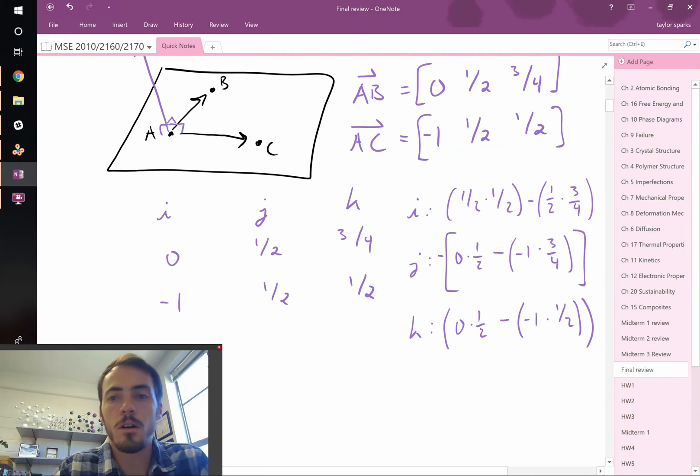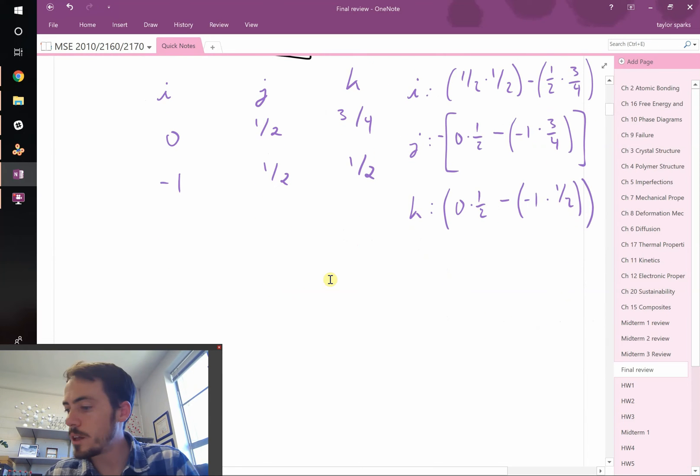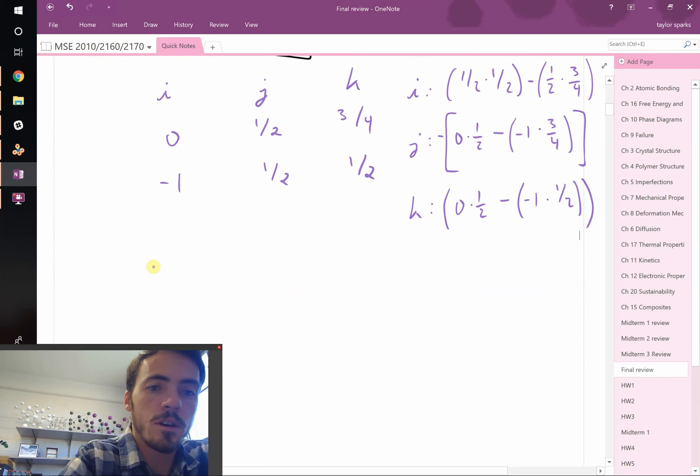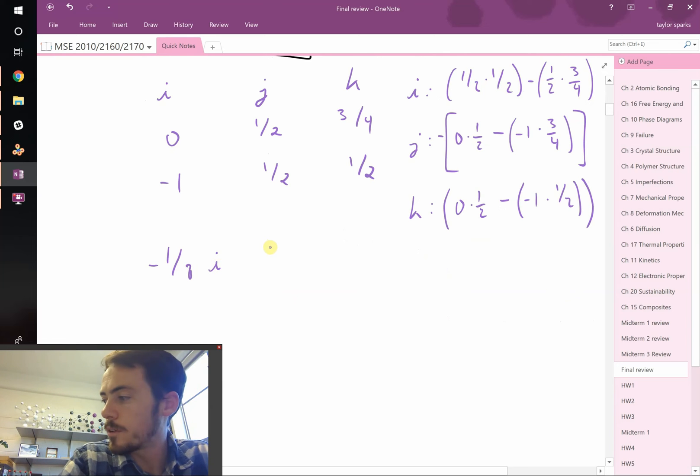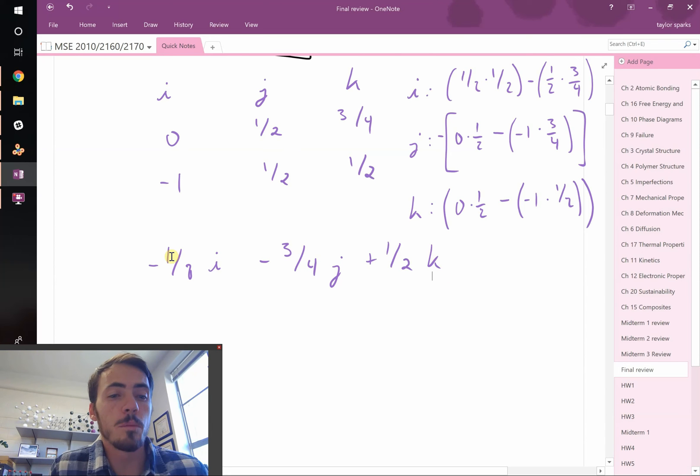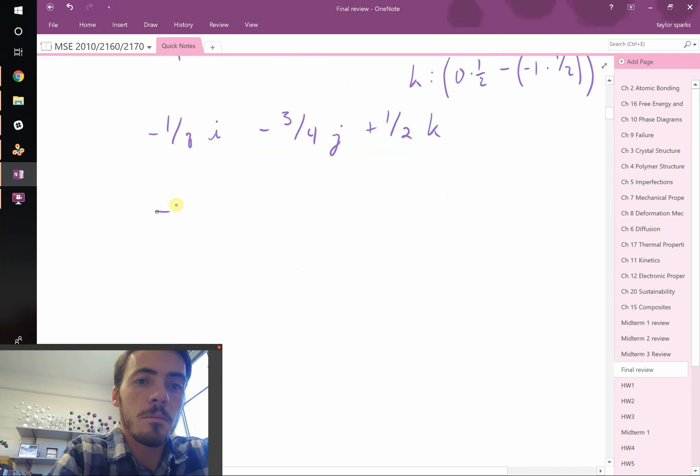When we plug all of this in, you can solve for i, j, and k. And when I do so, I find that for i, I get negative 1/8. And then for j, I get minus 3/4. And then for k, I get plus 1/2. That is the vector which is normal to our plane. So if we want to turn it into Miller indices, all we have to do is multiply it by something so they're integers. Let's multiply it by 8. That makes this become minus 1, this becomes minus 6, and this one becomes positive 4.